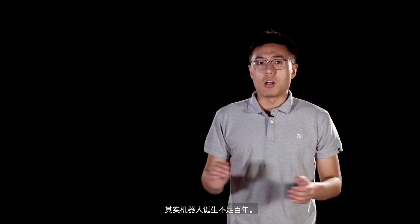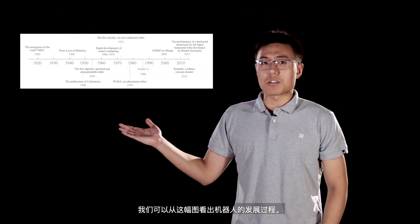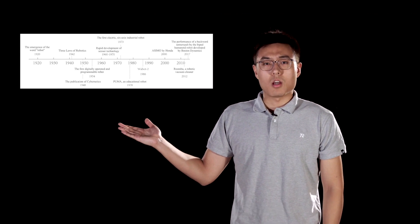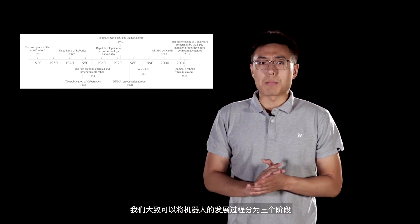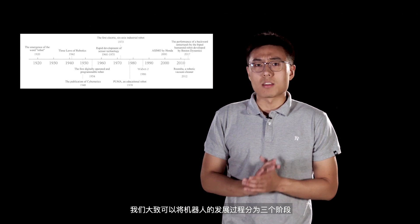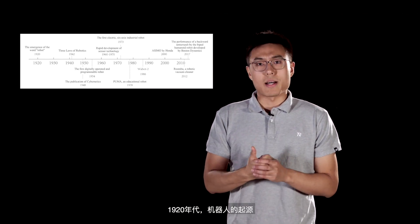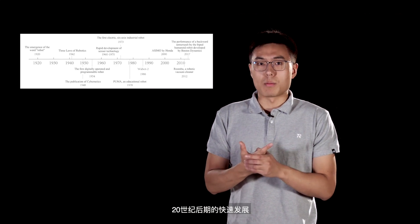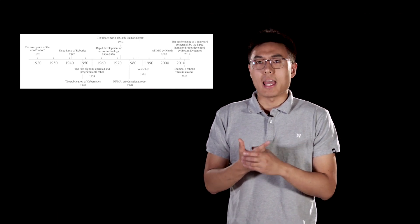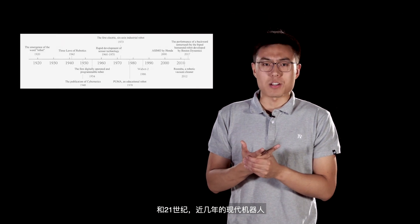Robots have existed for less than a century. This timeline shows the evolution of robots, which can be roughly divided into three stages: the origin of robots in the 1920s, the fast development of robots in the late 20th century, and modern robotics in the 21st century.